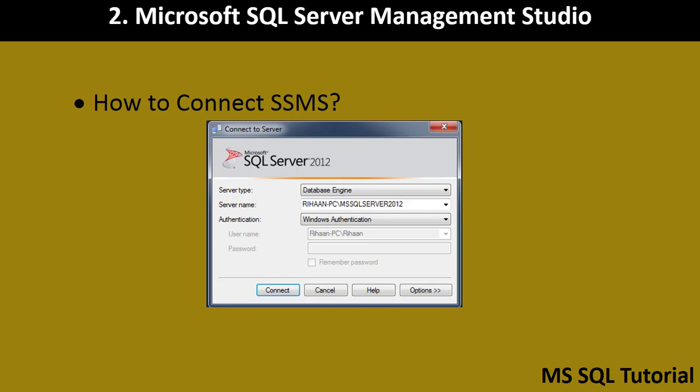In step 16 I set the authentication mode to Windows authentication. Using these three steps, if you look at my screen, I have given the server type as database engine. We have multiple options for server type, and for the server name you will see the system name slash the instance ID. The authentication mode specified in step 16 is what we will use to connect.